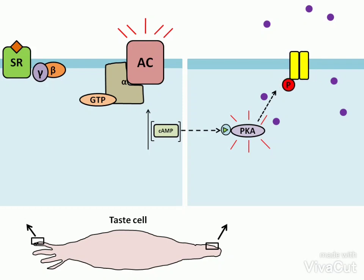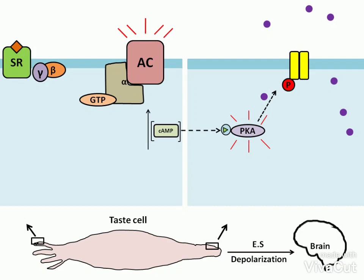As a result, the potassium ion passage is blocked. The reduced efflux of potassium ions depolarizes the taste cell. This depolarization triggers an electrical signal to the brain.